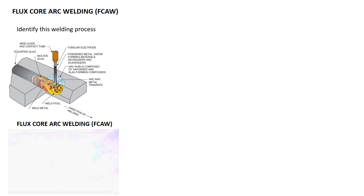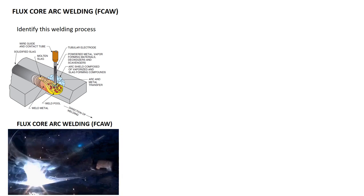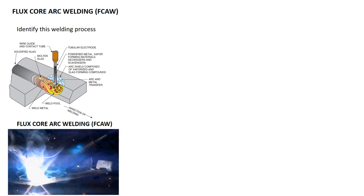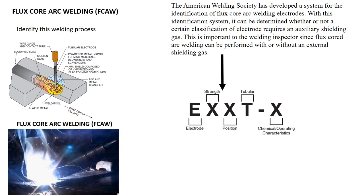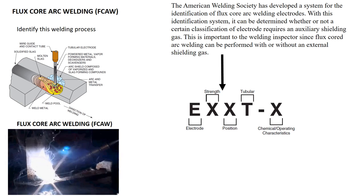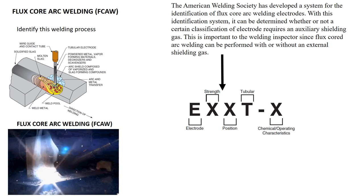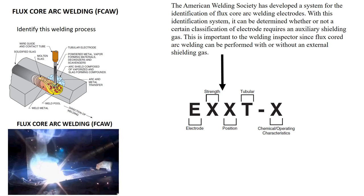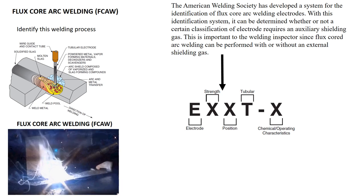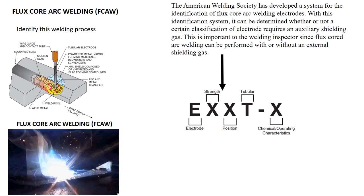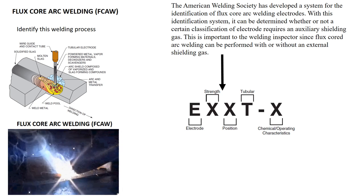Take a few seconds and identify this welding process. This welding process is referred to as flux core arc welding. The American Welding Society has developed a system for identification of flux core arc welding electrodes. With this identification system, it can be determined whether or not a certain classification of electrode requires an auxiliary shielding gas. This is important to the welding inspector since flux core arc welding can be performed with or without an external shielding gas.